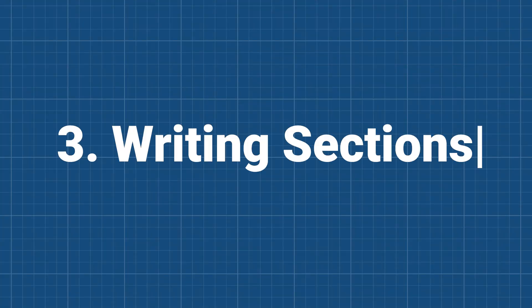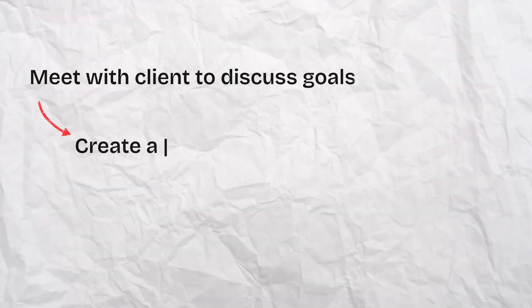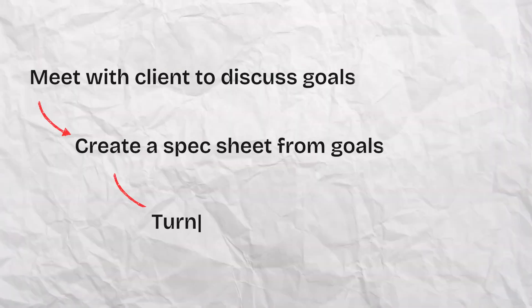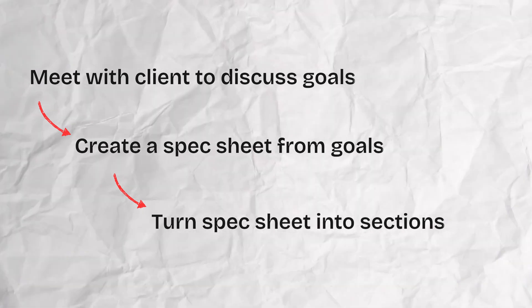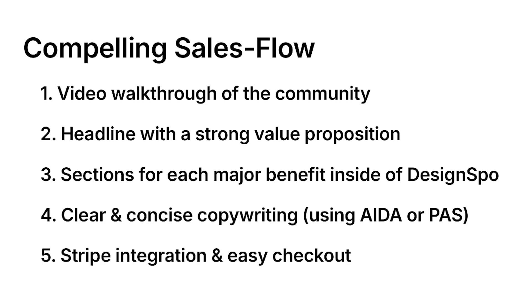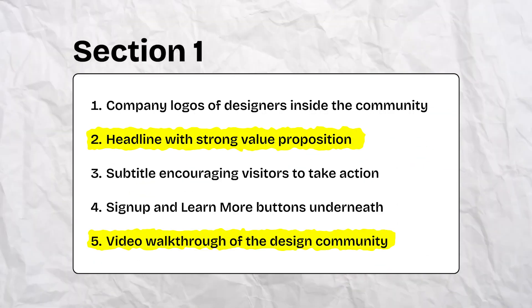Next, we need a way to turn our spec sheet into a blueprint for our website, because right now our spec sheet is basically a wishlist. So how do we turn this wishlist into a roadmap we can actually use to build a beautiful website? By converting our spec sheet into website sections. Every website I design follows this formula: I ask a client what their goals are, then we get clear on what we'll need to reach those goals, and then I take that spec sheet and turn it into sections on their new website. On my DesignSpo spec sheet, I wrote that I wanted a video walkthrough and a headline with a strong value proposition. I can combine those into the first section on my website, so when I sit down to design, I know exactly what I'm doing.